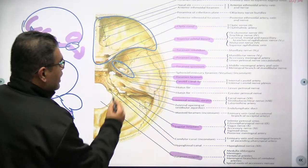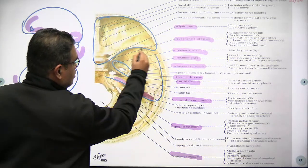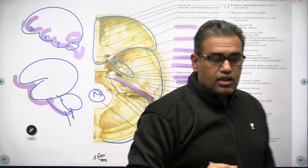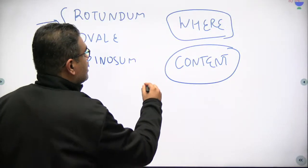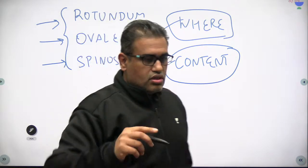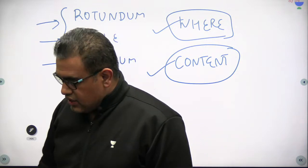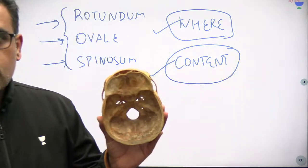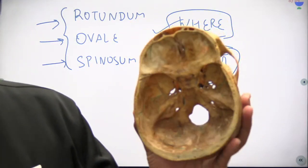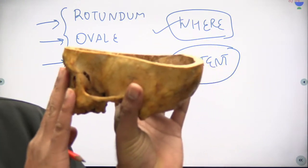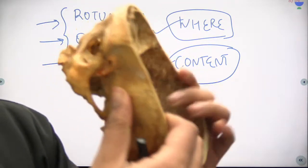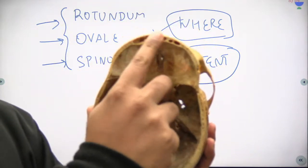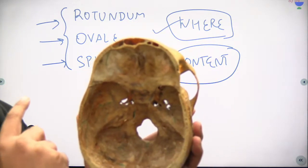So remember two things for each skull foramen: where it is and what are its contents. In earlier sessions we have already done the cranial nerve nuclei columns, which will help. I'll now bring in a physical skull to show you. The vault has been cut and removed — this is the norma basalis, the base of the skull, and this is the cranial cavity. Anteriorly you can see the frontal air sinuses and posteriorly is the posterior cranial fossa. Have a quick look at what we just saw in the slide.